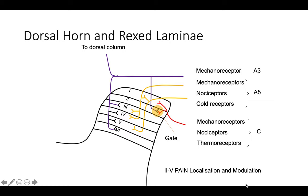The dorsal horn is organized in laminae — Rexed laminae 1, 2, 6. A-beta fibers also interact through a collateral to C fibers in lamina II, the substantia gelatinosa. This is where the gate control theory operates: when you rub an area, mechanoreceptors are activated through A-beta fibers, which inhibits transmission through C fibers. Pain is then transmitted through the contralateral ventrolateral spinal cord via the spinal reticular system, from the medulla to the brainstem reticular formation and hypothalamus, then diffuse projection to the cortex.